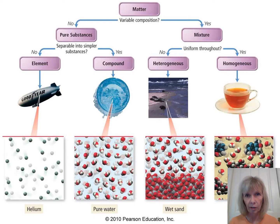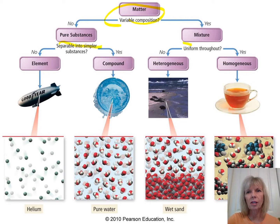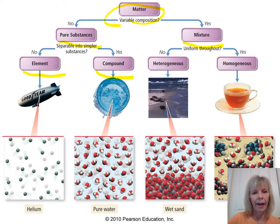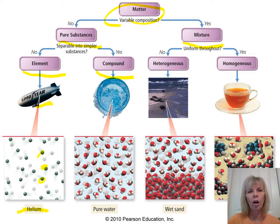This next slide is the same classification of matter but with pictures at the molecular level. At the top we have matter, which we classify into pure substances and mixtures. Pure substances are classified into elements and compounds. An element's smallest piece is an atom — for example, helium, which makes the Goodyear blimp float, shown here as individual atoms. A compound example would be water, which is comprised of hydrogen and oxygen, shown here as molecules.